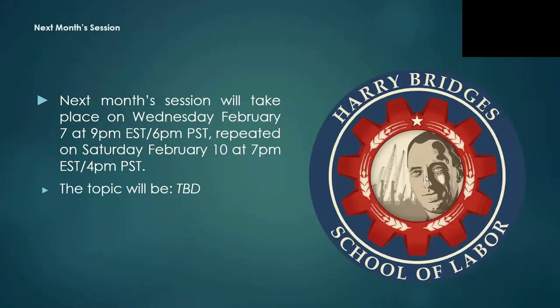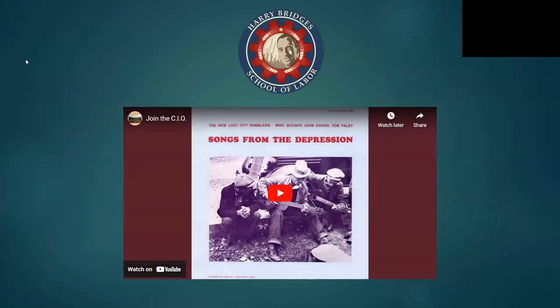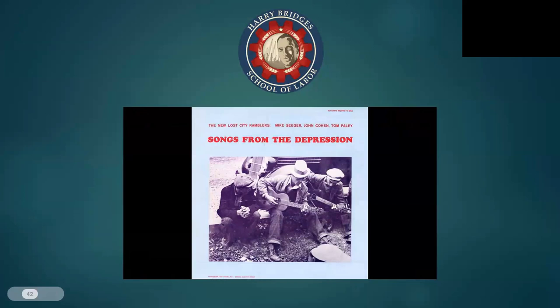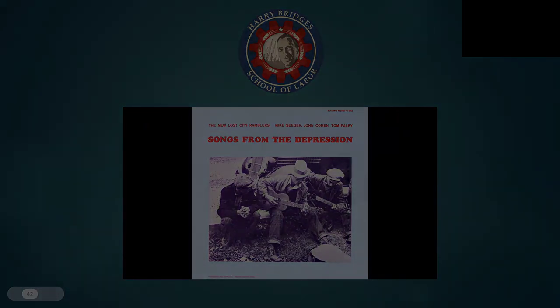Next month's session will take place on Wednesday, February 7th at 9 p.m. Eastern, 6 p.m. Pacific, and repeated on Saturday, February 10th at 7 p.m. Eastern, 4 p.m. Pacific. Right now the topic isn't finalized, but it will be something with regards to Black History Month and Black Workers and Labor, so keep an eye out for that. Our closeout song tonight is 'Join the CIO,' performed by the New Lost City Ramblers: 'I am a union woman, just as brave as I can be. I do not like the bosses and the bosses don't like me.'